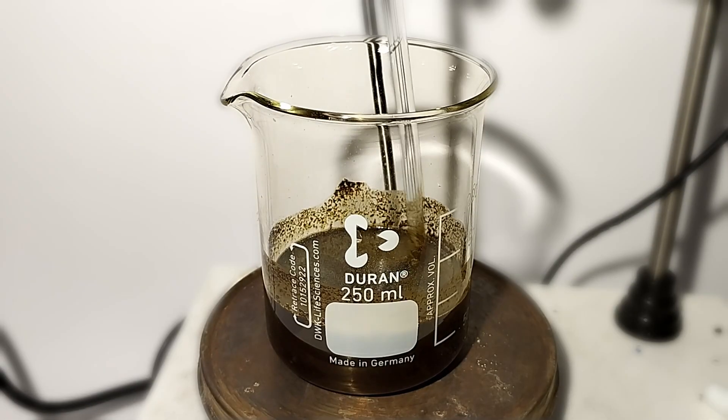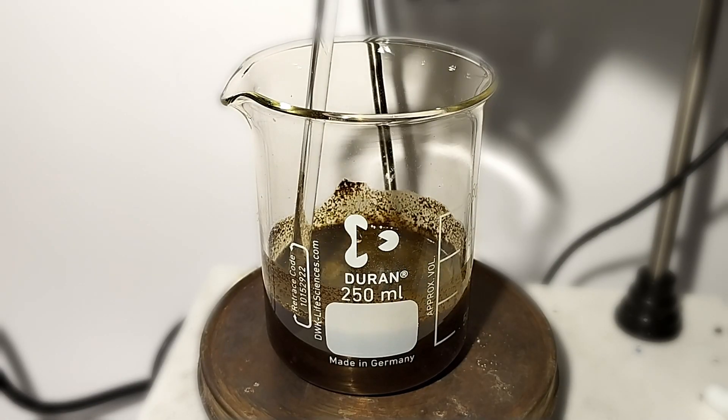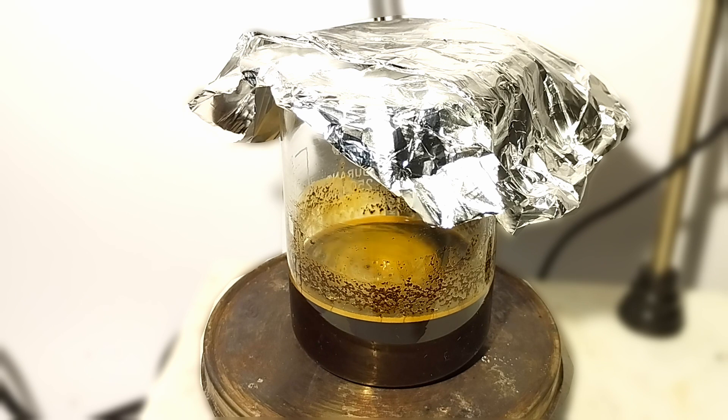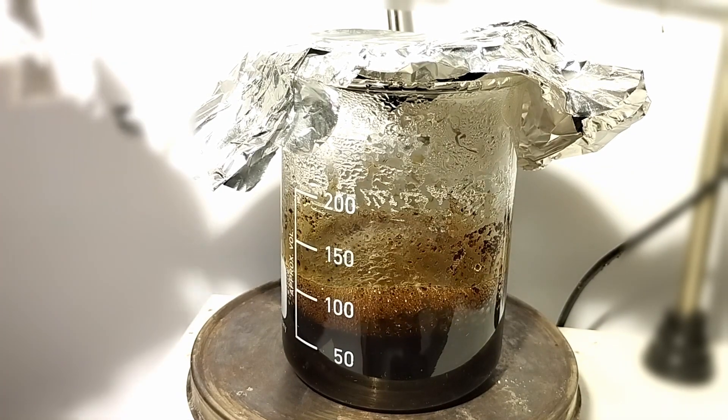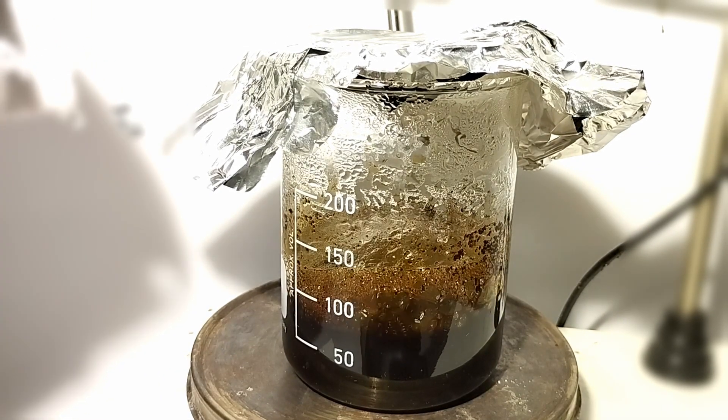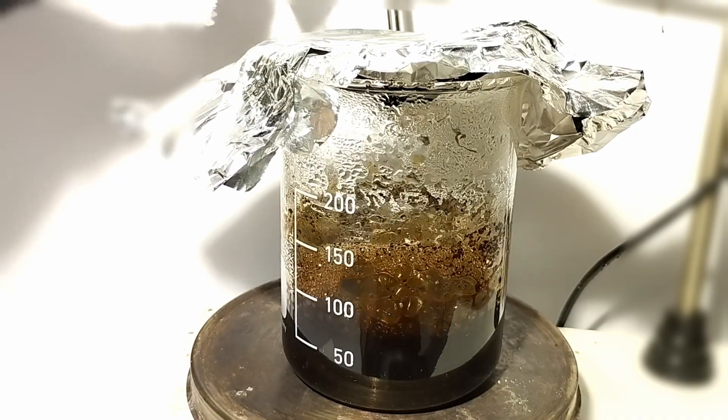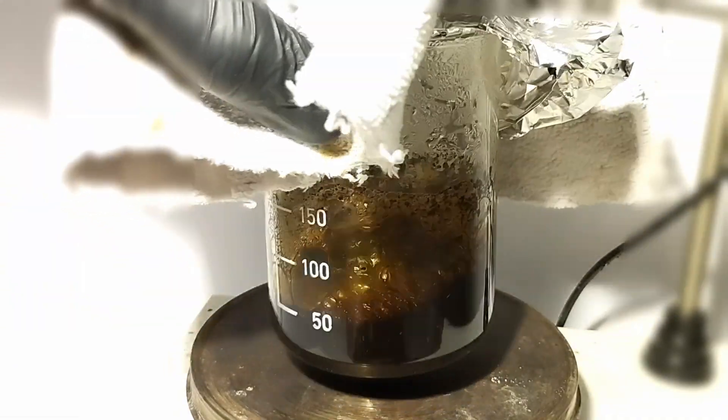I placed the mixture on a hot plate and turned on the heat. I also placed some aluminum foil on top of the beaker to eliminate water loss. Once the mixture starts boiling, you should keep it boiling for 15 minutes. The mixture will foam a lot, so to prevent it from foaming over, just pick it up and shake it.